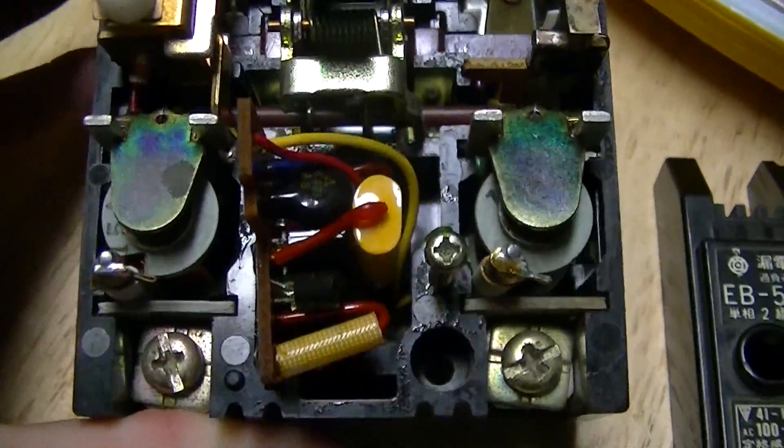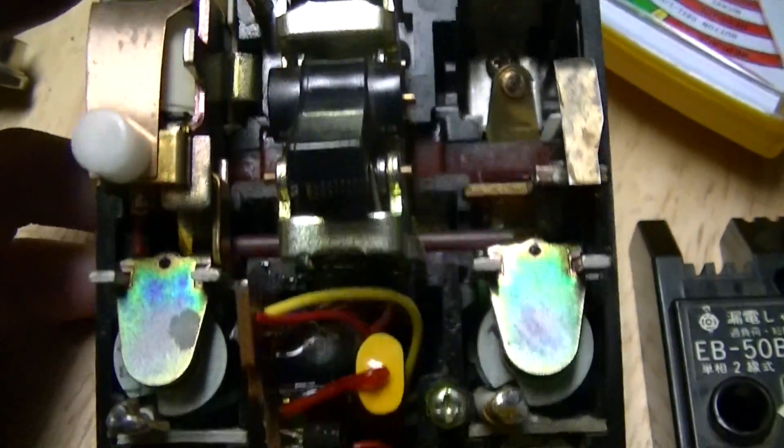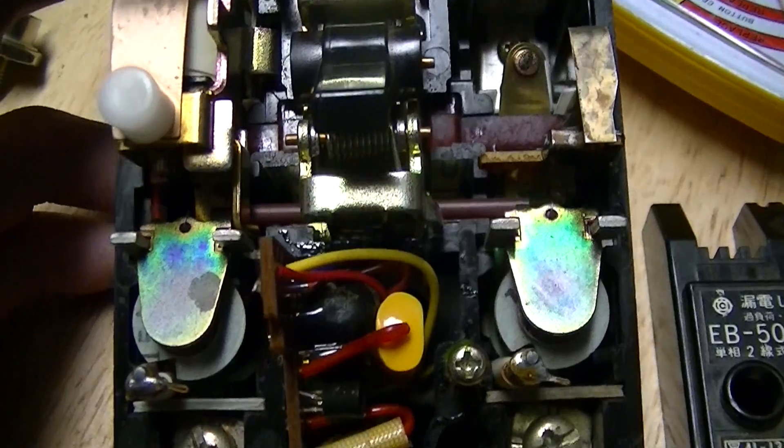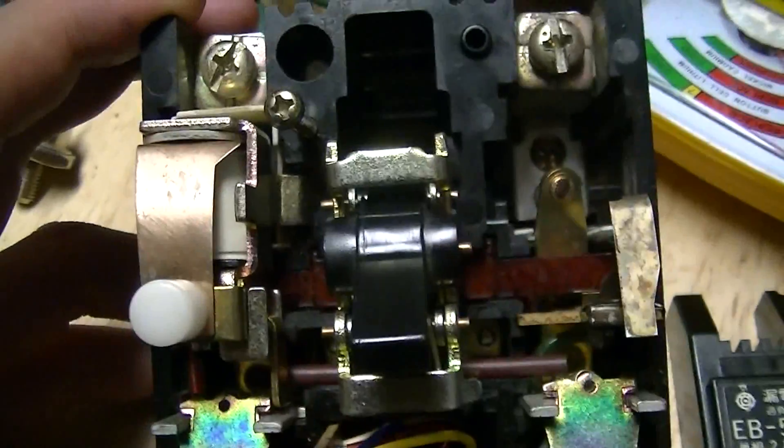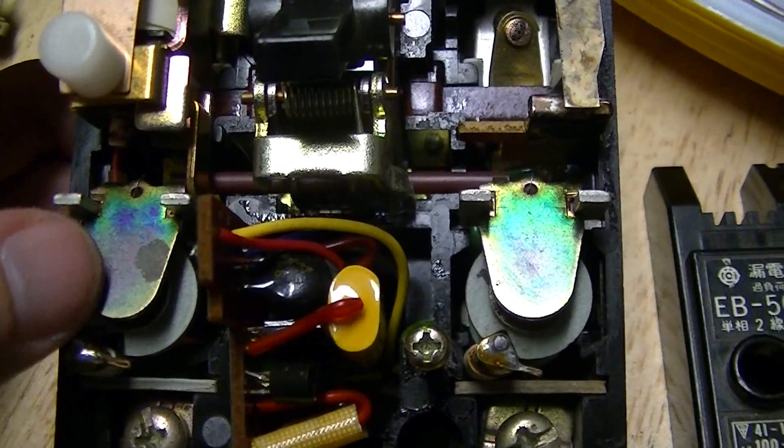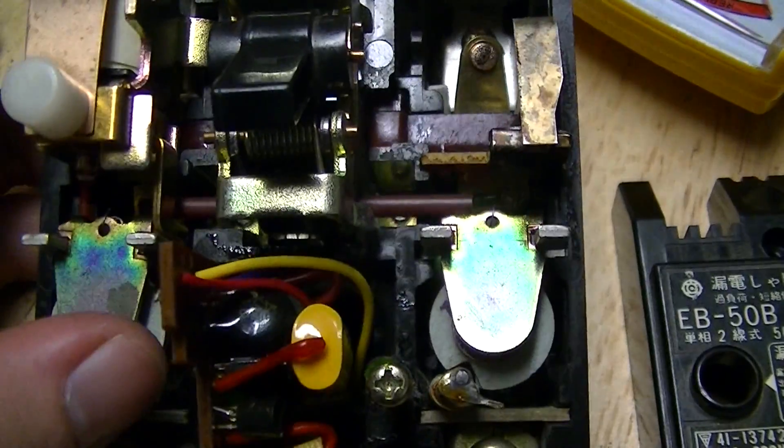Internally, it's nothing super fancy, just a typical magnetic circuit breaker with built-in ground fault detection. As far as I can tell, the operating elements are purely magnetic and it's not thermal.